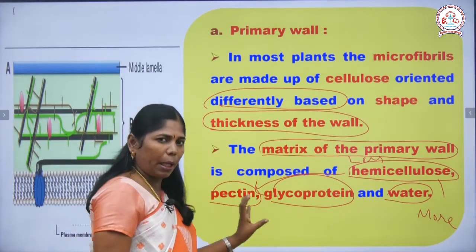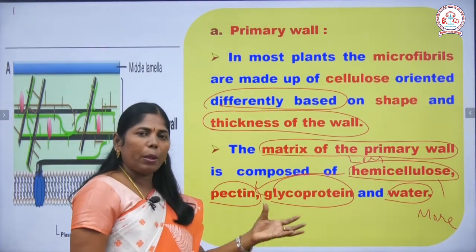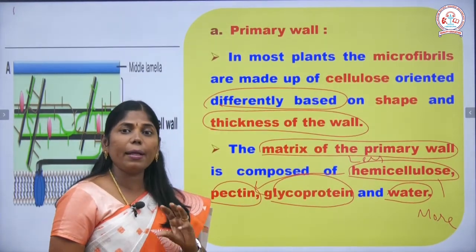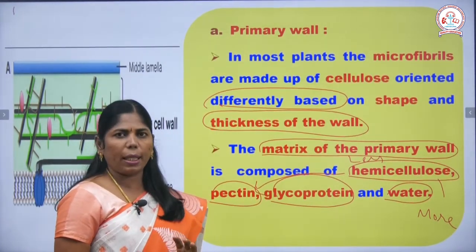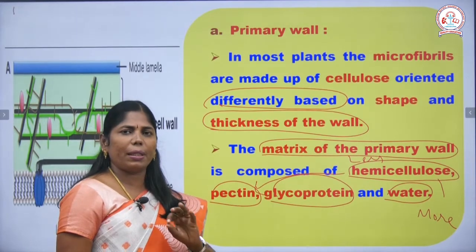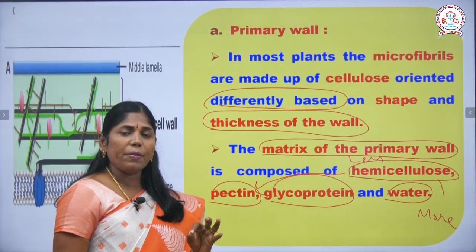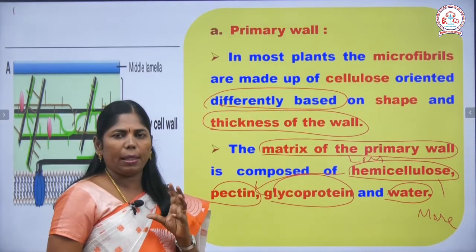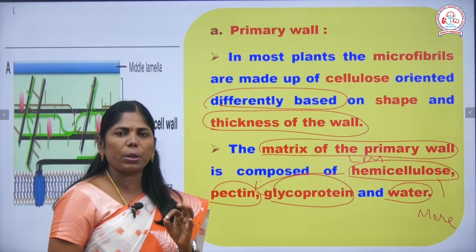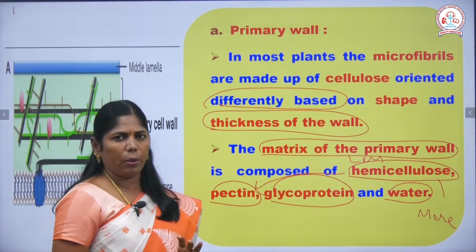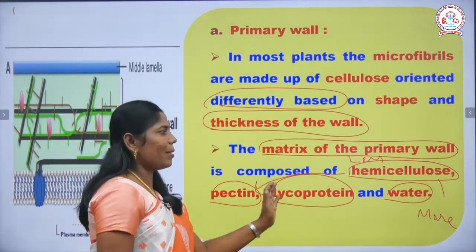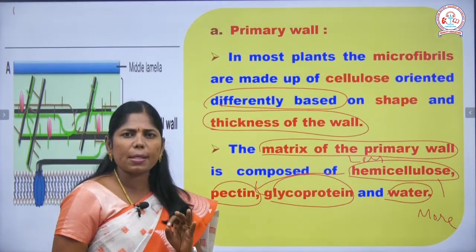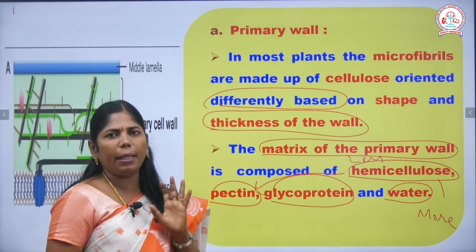Pectin is present in the primary wall. In the secondary wall, lignin is present, which gives strength and hardness to the secondary wall.